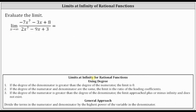Let's first review how to determine limits at infinity for rational functions using the degree of the numerator and denominator. Number one: if the degree of the denominator is greater than the degree of the numerator, the limit is zero.